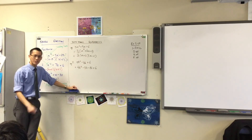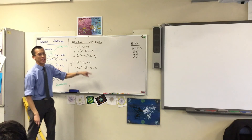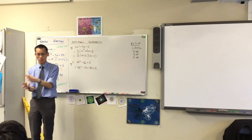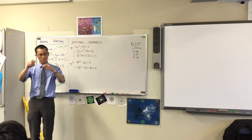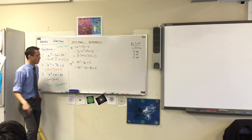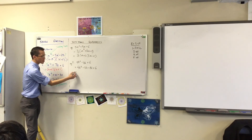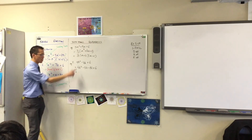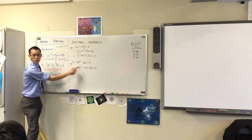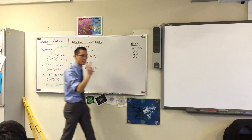Minus 11k becomes minus 3k minus 8k — they're the same thing, just looked at in two parts rather than one. Now I've turned this question from one we didn't know how to do into one we do know how to do. Think back two lessons.